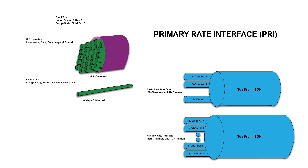The next diagram shows a breakdown of what the PRI line is. Again, this is for illustration purposes of what a PRI would look like. You'll notice that there are tubes. Twenty-three of those tubes are for voice channels, pictured above. Those are also known as the B channels, that would contain user voice, data, image, and sound.